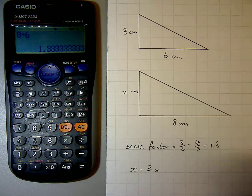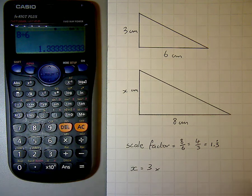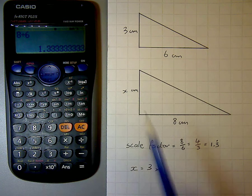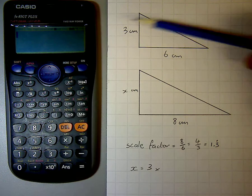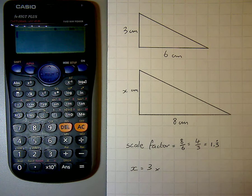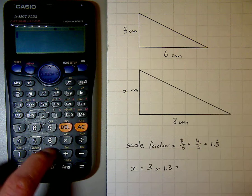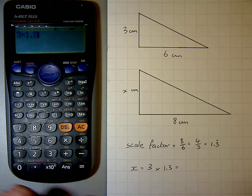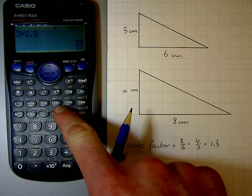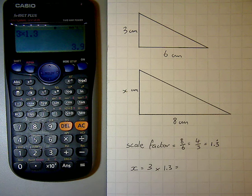Okay, so then what people are now doing to try and find x, again, correctly saying 3 times by the scale factor, but incorrectly writing 1.3. So 3 times 1.3, and they're getting 3.9 centimeters.